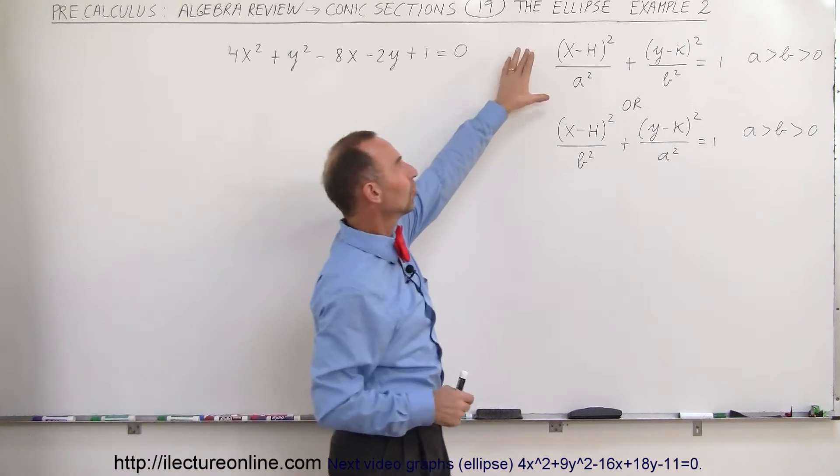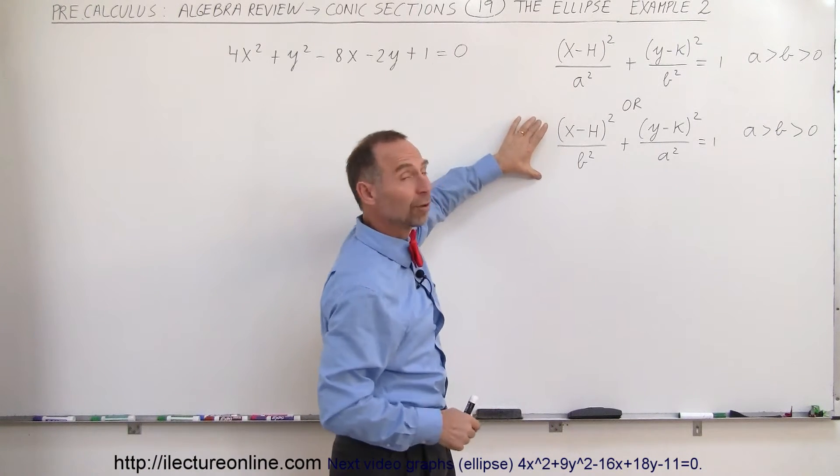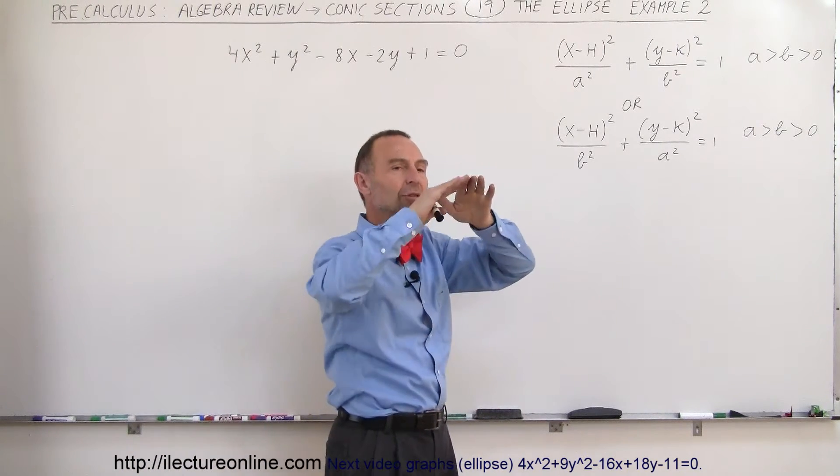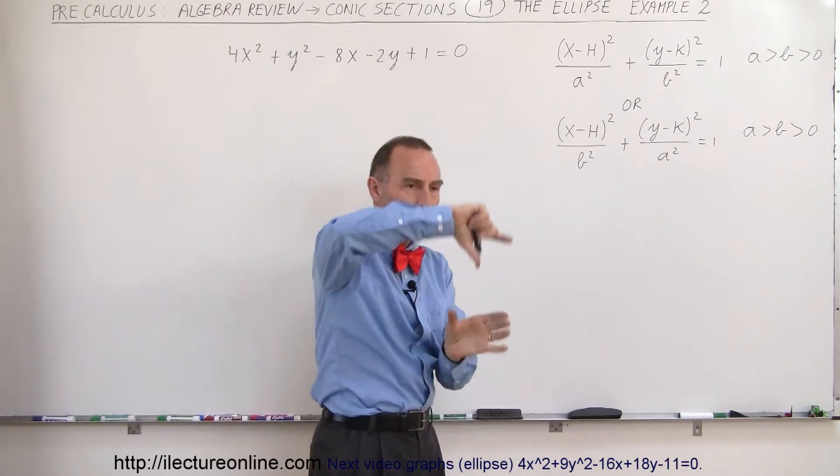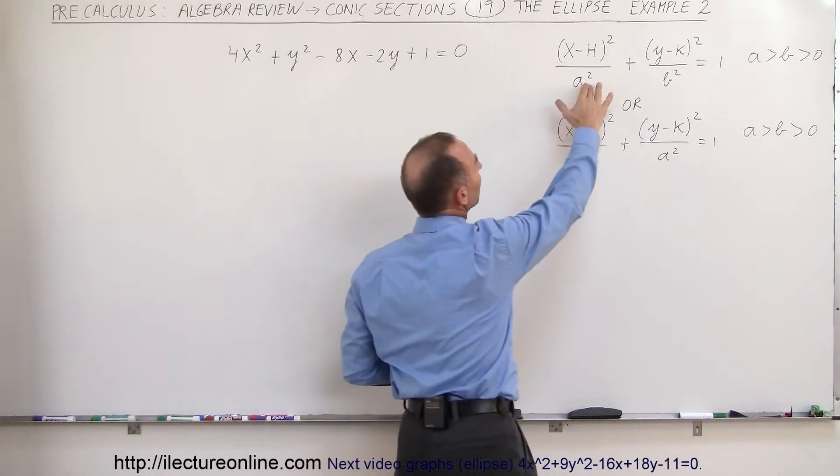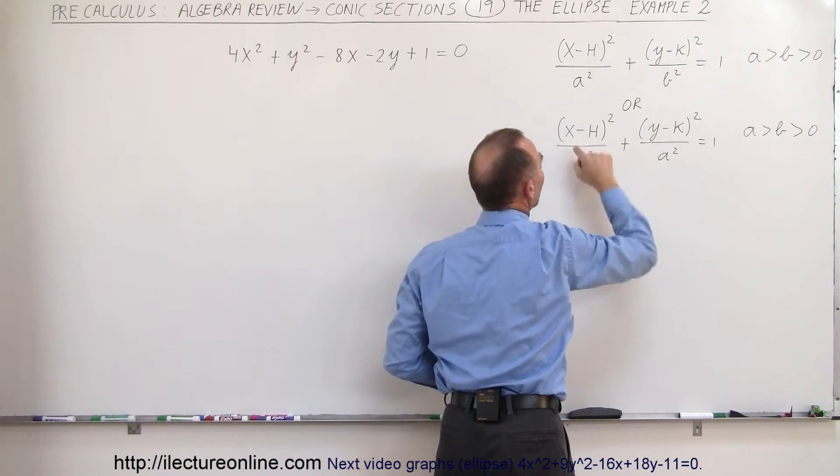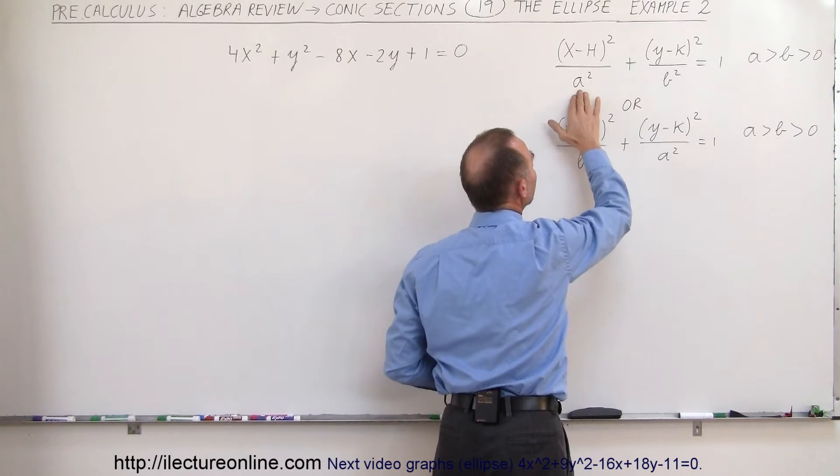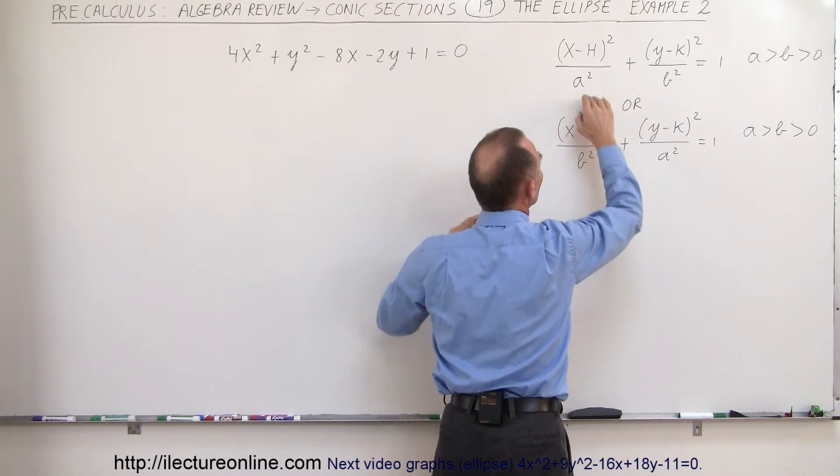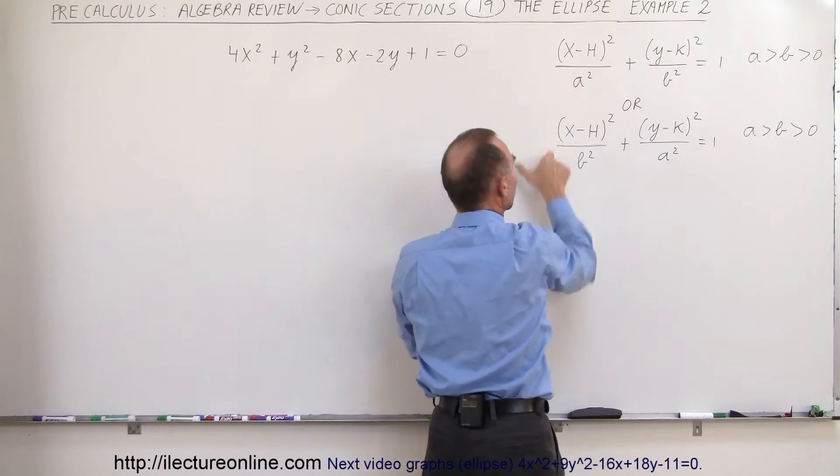Of course, either this will be the general form or this will be the general form depending upon if the ellipse is situated sideways or vertically. This would be an ellipse that is sideways, this is an ellipse that is vertical, and it depends upon the denominators. If the denominator underneath the x is larger it's sideways; if the denominator under the x is smaller then it's vertical.